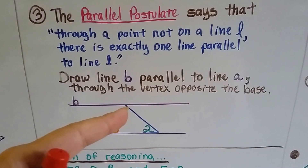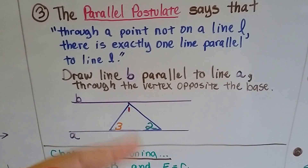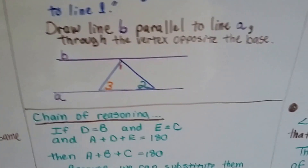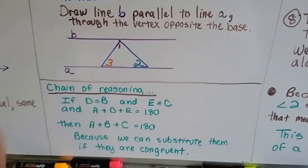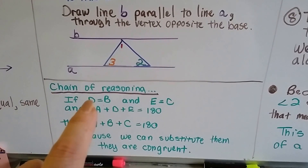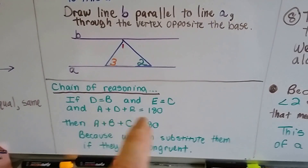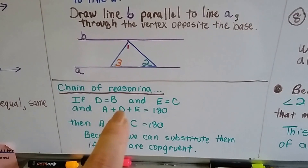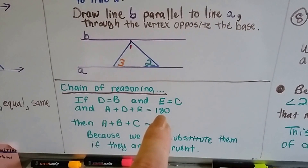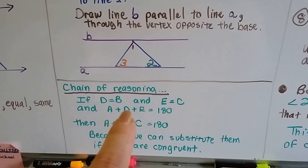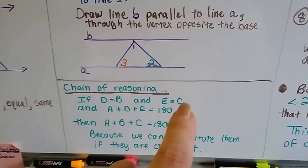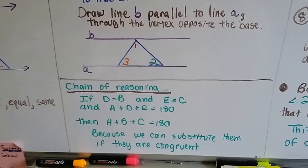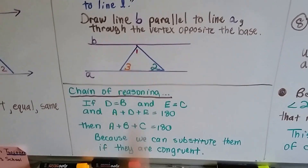Now, here's the chain of reasoning. If D and B are equal to each other, and E and C are equal to each other, and we know that A, D, and E equal 180, then if D equals B and E equals C, we can substitute them and get A, B, C as 180. Because we can substitute angles if they're congruent — that's what we're going to be doing.